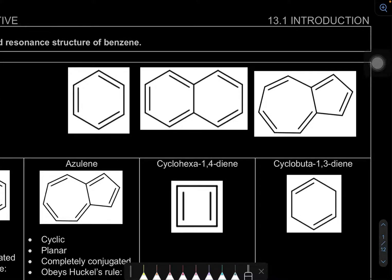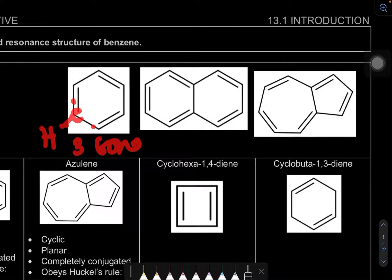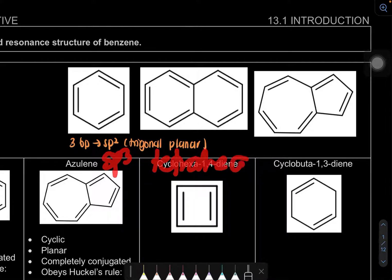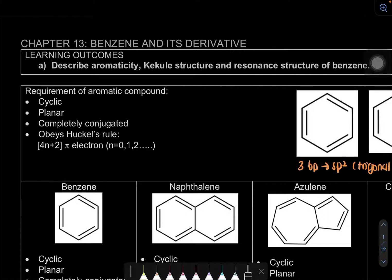Why planar? If we look at carbon here, each carbon has one hydrogen, so it has three bonding pairs. When a carbon has three bonding pairs, it is called sp2. And if you still remember, the shape of sp2 is trigonal planar, which means it's flat. Compare this to sp3, which is tetrahedral — a 3D arrangement — so that one is not flat. But for aromatic compounds, the structure is planar.